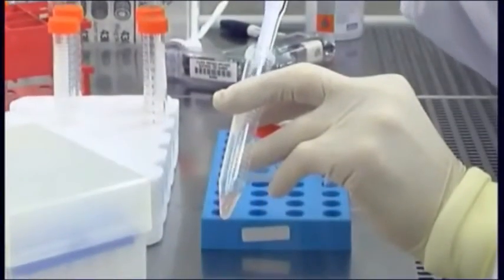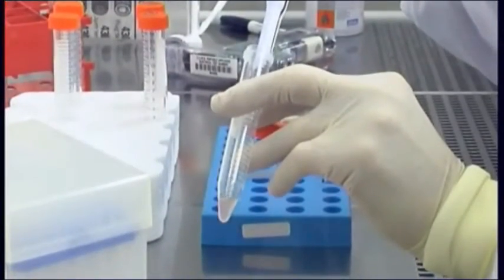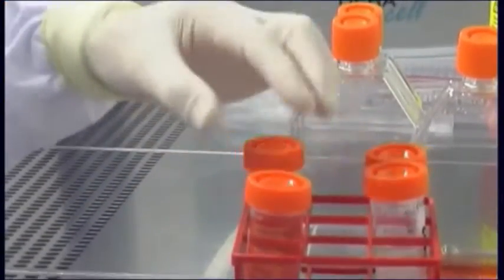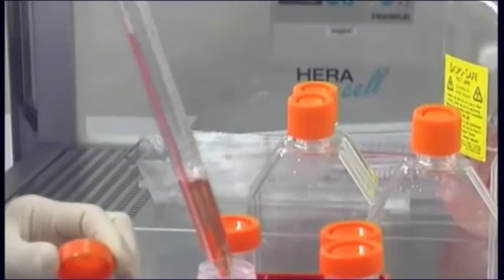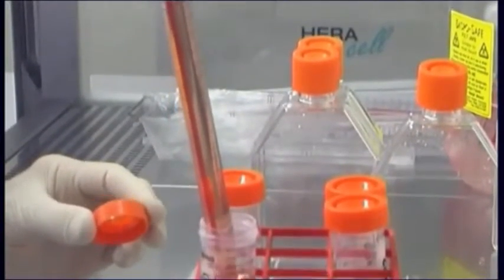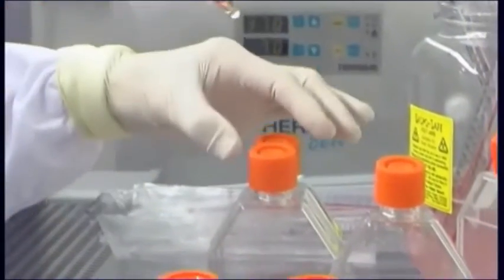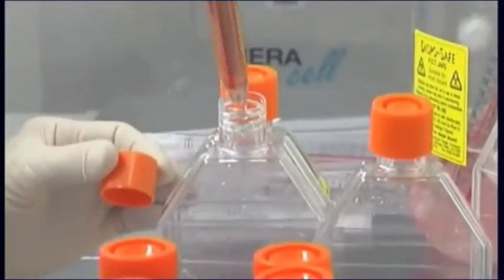Remove 100 to 200 microliters of cell suspension and perform a cell count. Add fresh medium to dilute the cells to an appropriate volume. Aliquot the cell suspension into fresh flasks at the desired seeding density.